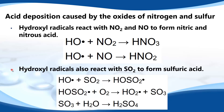Hydroxyl radicals also react with sulfur dioxide to form sulfuric acid. Here we have a hydroxyl radical reacting with sulfur dioxide to form an HSO3 radical. The HSO3 radical reacts with oxygen to form sulfur trioxide, SO3. Finally, sulfur trioxide reacts with water to form H2SO4, which is sulfuric acid.